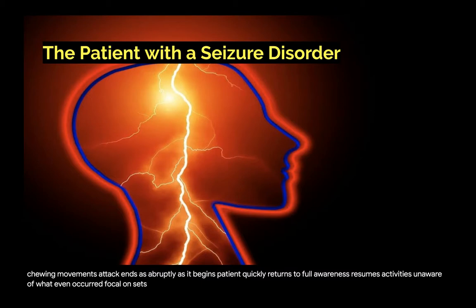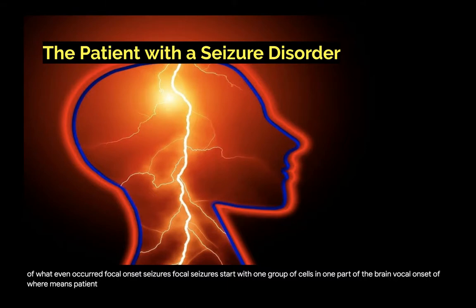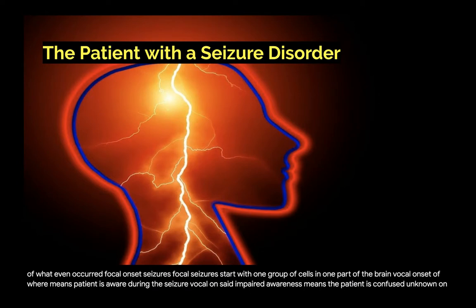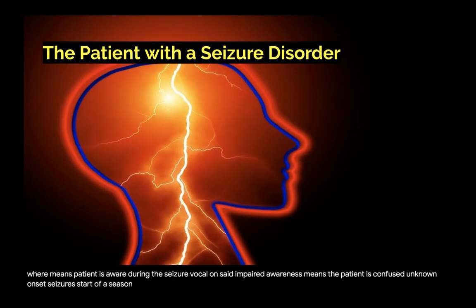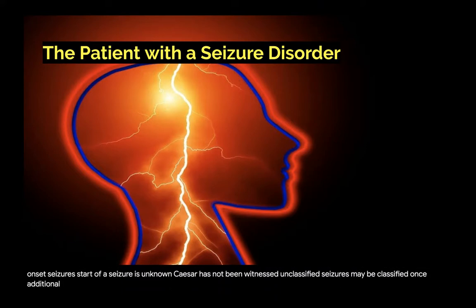Focal seizures start with one group of cells in one part of the brain. Focal onset aware means the patient is aware during the seizure, while focal onset impaired awareness means the patient is confused. Unknown onset seizures are those where the start is unknown or the seizure has not been witnessed. Unclassified seizures may be classified once additional information has been brought to the neurologist's attention.